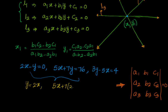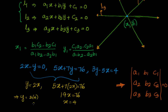Substituting y = 2x into the second equation: 5x + 7·(2x) = 76, giving 19x = 76, so x = 4. If x = 4, then y = 2·4 = 8. So the point of intersection of the first two lines is (4, 8).